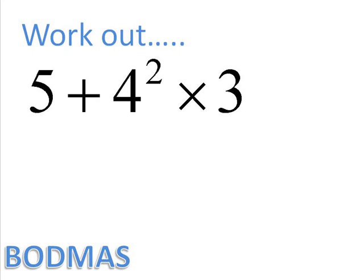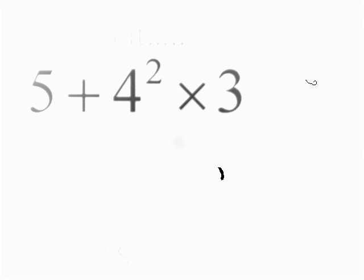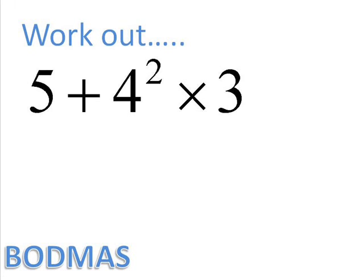So using BODMAS, we'll have a look at another question. This one here. 5 plus 4 squared times 3. Now we go through BODMAS. There's nothing in brackets. But there is some orders. That's the 4 squared bit. Now 4 squared means 4 times 4. 4 times 4 is 16. So we get the question 5 plus 16 times 3.